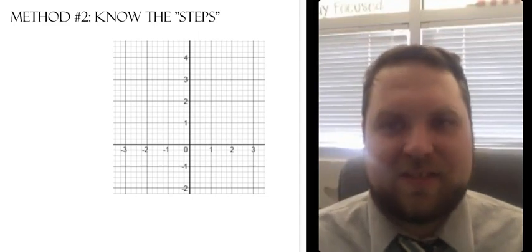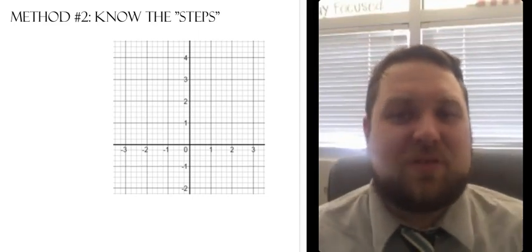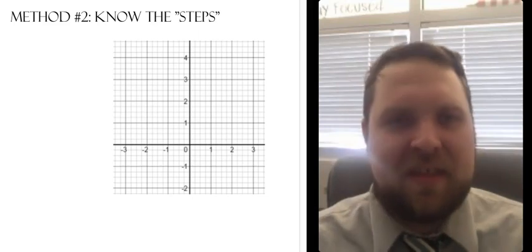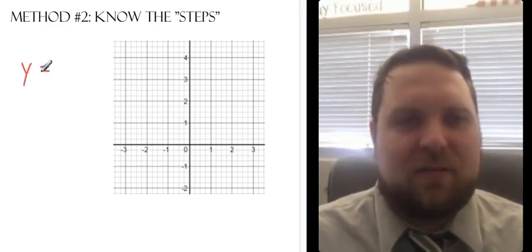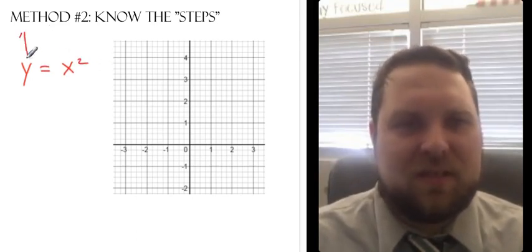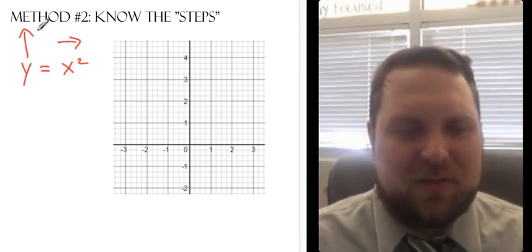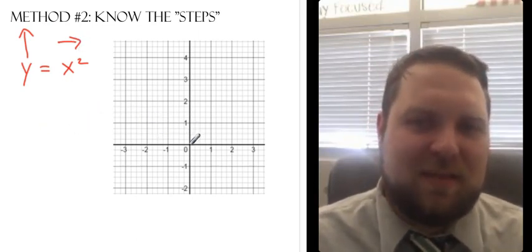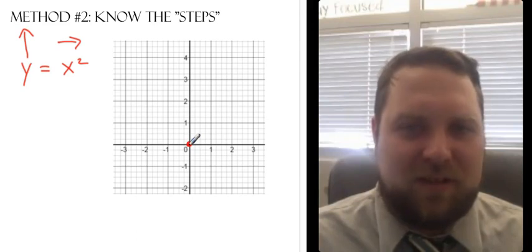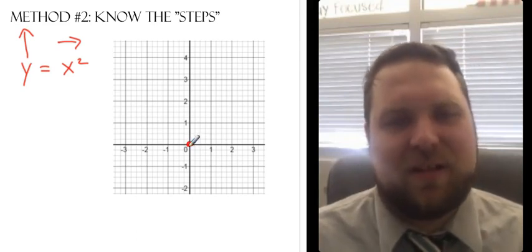Our final way to graph this is to know what I'm calling the steps, just for lack of a better way to describe it. And the way I want you thinking about this is that our equation is y equals x squared. y represents how much we go up. x represents how much we go out. The amount that we go up is equal to the amount that we go out squared. So if I'm looking at this, I start with my vertex.